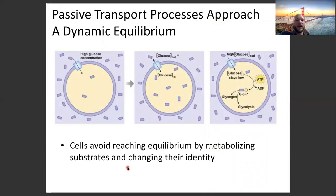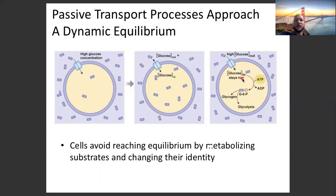Cells avoid reaching equilibrium by metabolizing substrates and changing their identity. With high glucose concentration outside and low inside, glucose transporters move glucose in — but eventually you'd reach equilibrium. In reality, we don't reach that because as glucose moves in, it's turned into other molecules for energy. So glucose concentration on the inside is always decreasing, maintaining always high concentration outside and always low concentration inside. Glucose moves in, gets broken down for energy — lower concentration inside the cell.